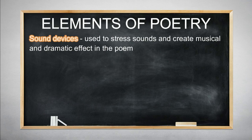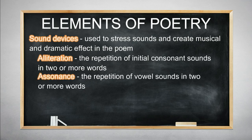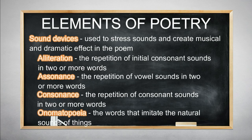Here are the sound devices that a poet may use: alliteration — the repetition of initial consonant sounds in two or more words; assonance — the repetition of vowel sounds in two or more words; consonance — the repetition of consonant sounds in two or more words; and onomatopoeia — words that imitate natural sounds of things.